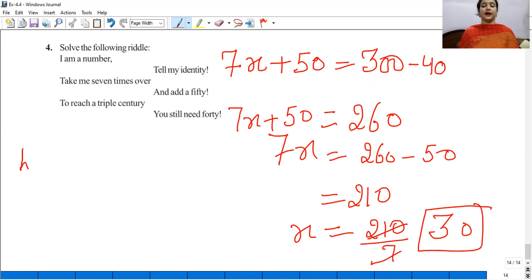So we want to find the number, which we assumed as x. So the number is 30. Let the number be x. So we assumed the number is x. Now 7 times that, added 50, still 40 short of reaching triple century. So 300 minus 40, and then solve, number is 30. Clear everyone.